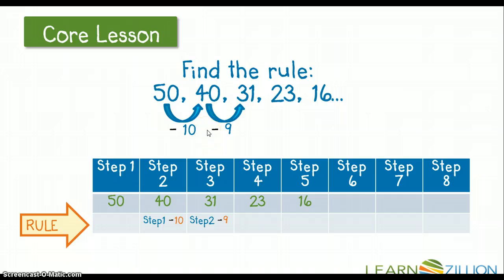I'm going to see if this pattern continues. So in step 1, I subtracted 10, and for step 2, I got 40. And then I took my number in step 2, which was 40, and subtracted 9, and got the number of 31.